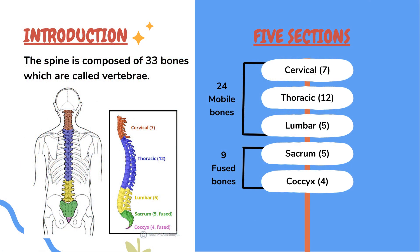The spine is composed of 33 bones. These 33 bones are called vertebra. In these 33 bones, 24 bones are mobile bones — they can freely move. And 9 bones are fused bones. The 24 mobile bones are divided into 3 sections: cervical, thoracic, and lumbar. In the 9 fused bones, there are 5 sacral bones and 4 coccyx.